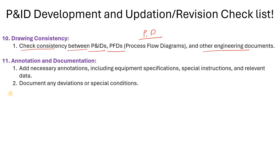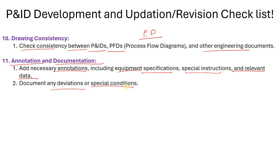Then annotation and documentation — add necessary annotations including equipment specifications, equipment details, and special instructions. If there is something specific, simply note it down in your P&ID. Include relevant data and document any deviation or special condition in the P&ID note section.